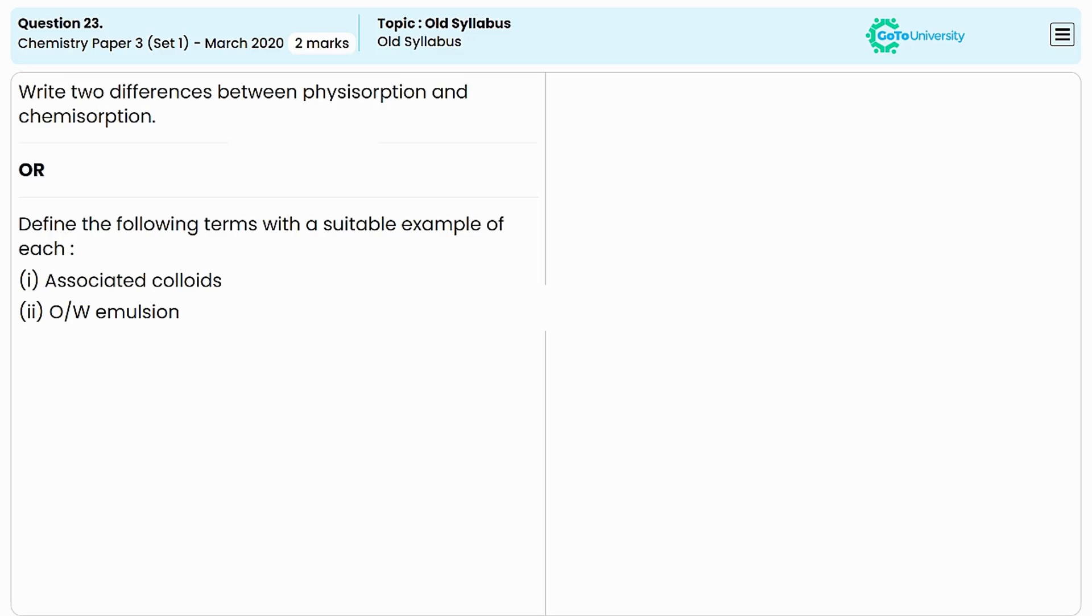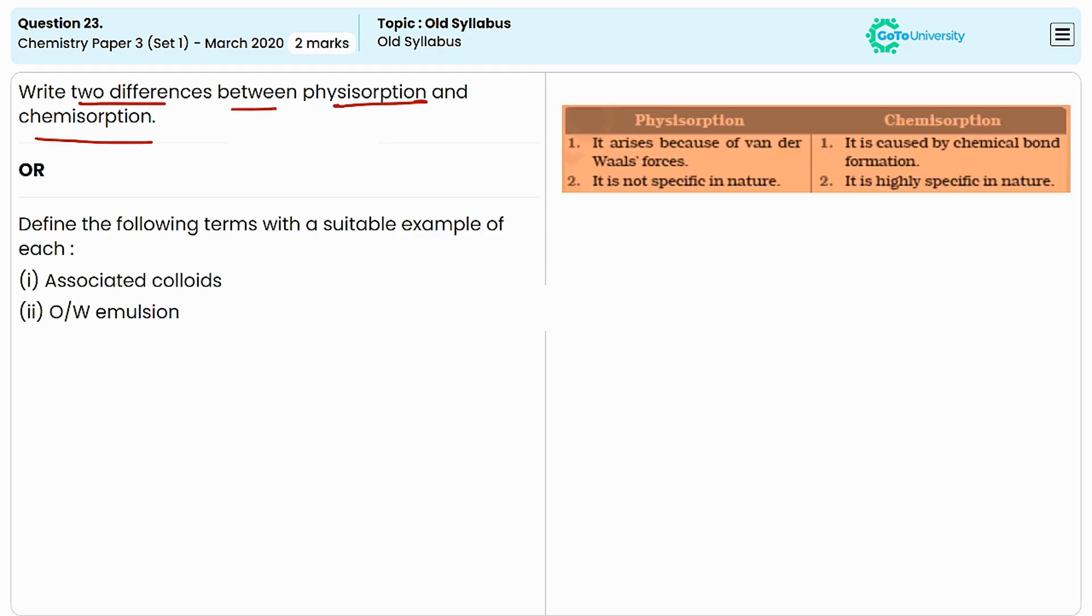In this question, we have to write any two differences between physisorption and chemisorption. Physisorption and chemisorption are two types of adsorption processes where molecules adhere to the surface, but they differ in their mechanism and characteristics.